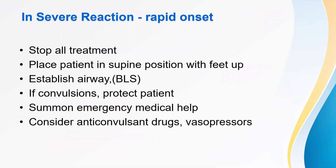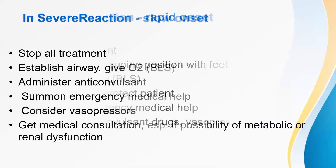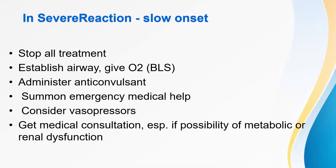Severe reaction, rapid onset — includes loss of consciousness with or without convulsions; probable cause is intravascular injection. Stop all treatment, place patient supine or in position with feet up, establish airway, protect the patient if convulsions occur, summon emergency medical help, and consider anticonvulsant drugs and vasopressors. Severe reaction, slow onset — possibly due to abnormal biotransformation and renal dysfunction. Stop all treatment, establish airway, give oxygen, administer anticonvulsant, summon emergency medical help, consider vasopressors, and get medical consultation especially if metabolic or renal dysfunction is suspected.